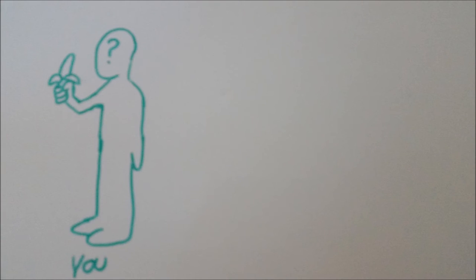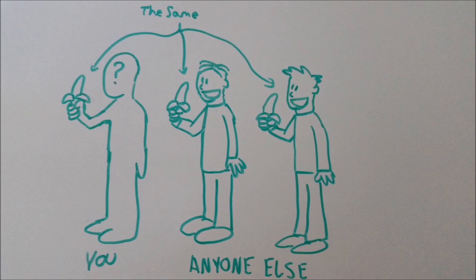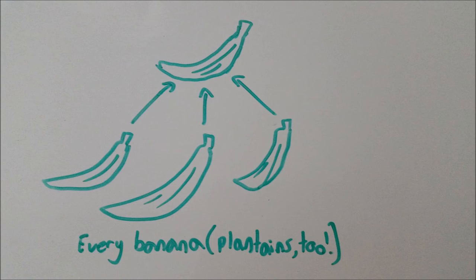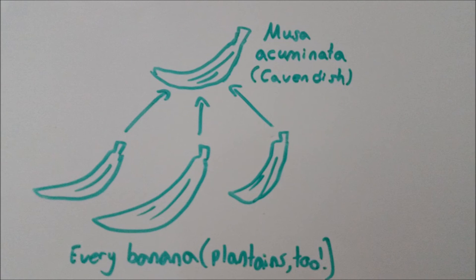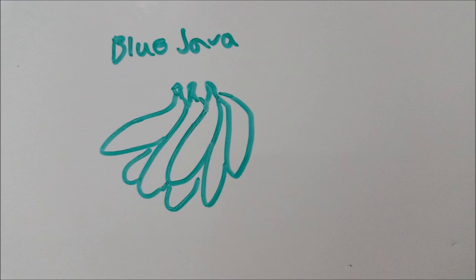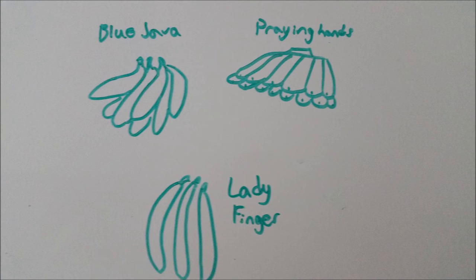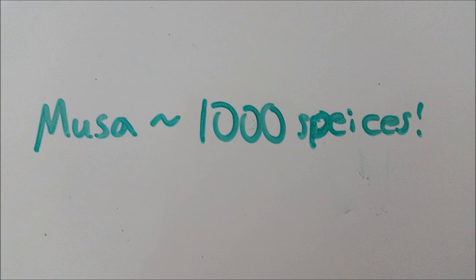However, did you know that every banana you or anyone else has ever eaten is the same? That's because every banana is a clone of the singular breed of banana, the Cavendish. Aside from a few exotic places where you can find bananas that taste like vanilla ice cream and so many others, the Cavendish is the only banana left out of the original over 1,000 species.